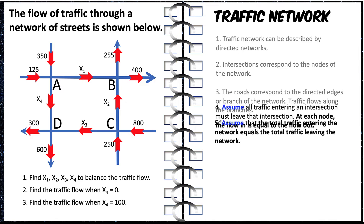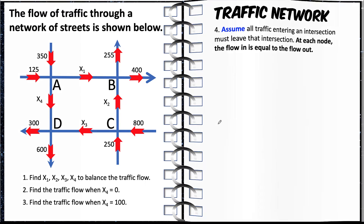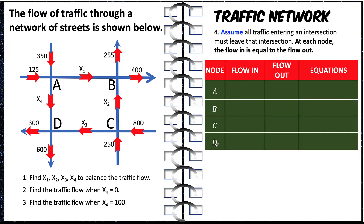Based on property number four of a traffic network, we can now form equations. Let's construct a table with the four nodes A, B, C, and D, recording the flow in and flow out of traffic. For node A, the flow in is 125 plus 350, and the flow out is x1 plus x4. Equating flow in and flow out gives us: x1 plus x4 equals 475. For node B, the flow in is x1 plus x2, and the flow out is 255 plus 400. The equation is x1 plus x2 equals 625.